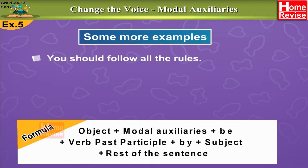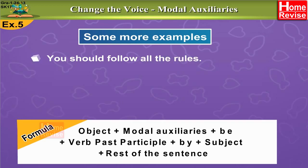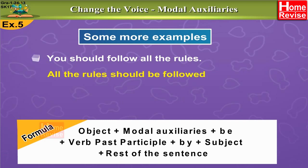Here we go with another example. 'You should follow all the rules.' What should you follow? — All the rules. So 'all the rules' is the object. Begin the passive sentence with 'all the rules,' then the modal auxiliary 'should,' plus 'be,' plus the past participle of 'follow' which is 'followed,' by 'you.' So the answer is: All the rules should be followed by you.